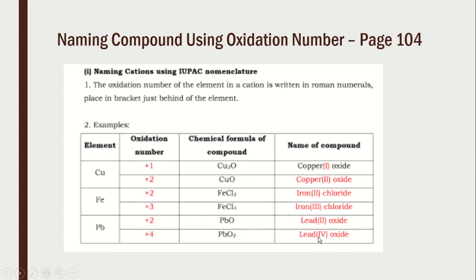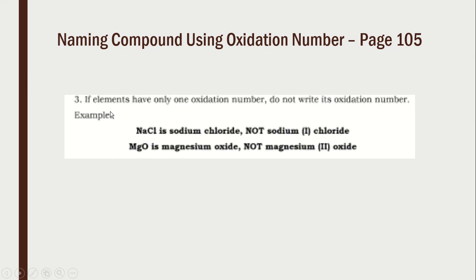It is very important to put the Roman numeral in brackets when there is a transition element in a compound. However, if the element has only one oxidation number, do not write the Roman numeral. For example, sodium chloride is just 'sodium chloride', not 'sodium(I) chloride', because sodium is Group 1 and has only one oxidation number, +1. Similarly, magnesium oxide is just 'magnesium oxide', not 'magnesium(II) oxide', as magnesium is Group 2 with only one oxidation number.